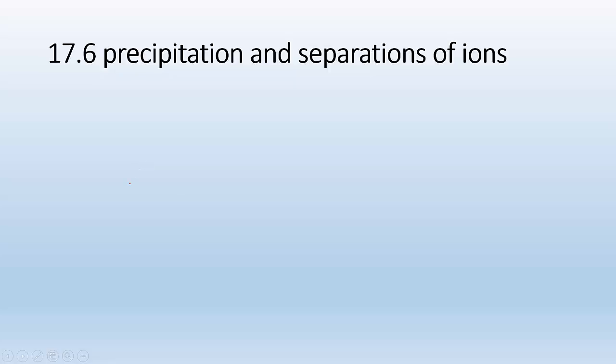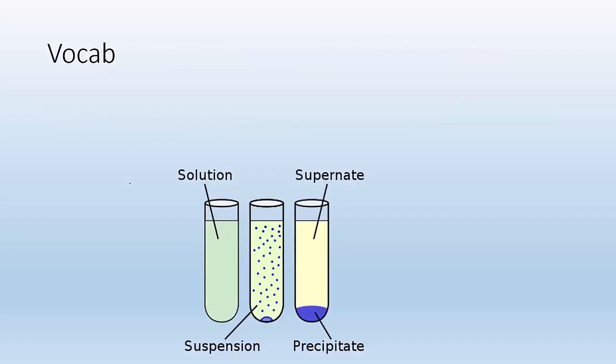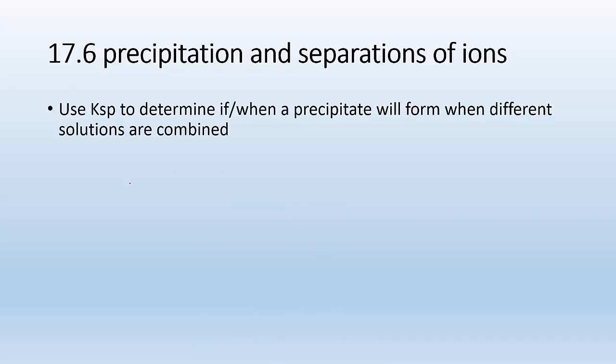How's it going ladies and gentlemen, Mr. John here again taking a look at 17.6 precipitation and separation of ions. So our objectives are to use the Ksp to determine if and when a precipitate will form when different solutions are combined. That's our objective.